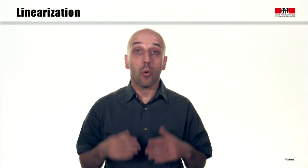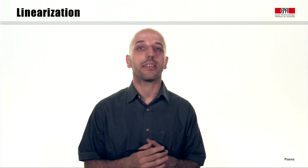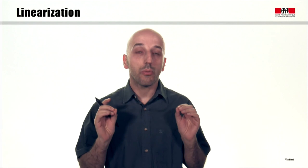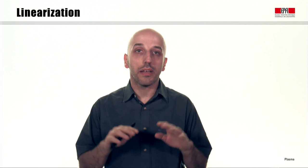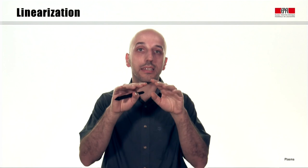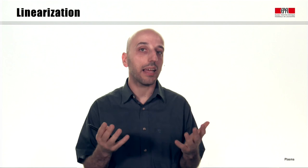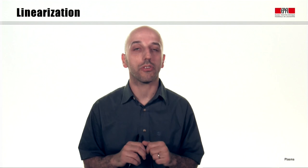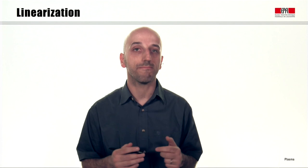We will now introduce the mathematical technique of linearization, which will be used throughout the rest of the course. The main idea is to assume that a physical quantity can be written as the sum of a constant uniform background value plus a small perturbation on top of it. We are typically interested in studying the evolution of the small perturbation, and this can be done by linearizing the equations.